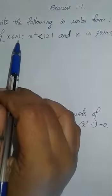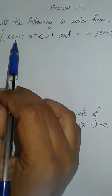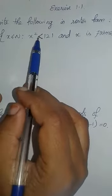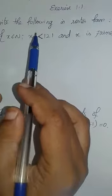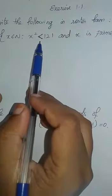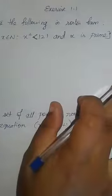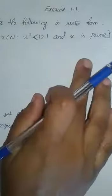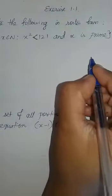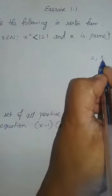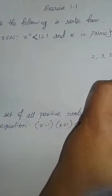Here the condition is X belongs to N, where N represents the set of all natural numbers, and X squared is less than 121, and X is a prime number. That natural number must be a prime number. The prime numbers start with 2, 3, 5, 7, 11, etc.